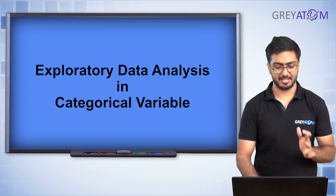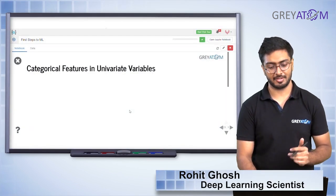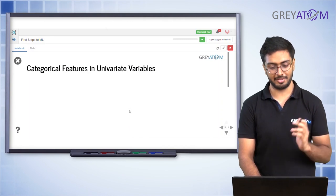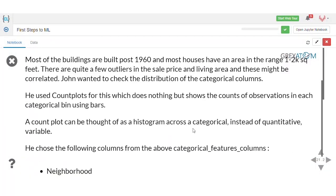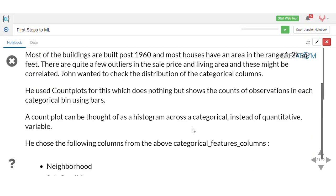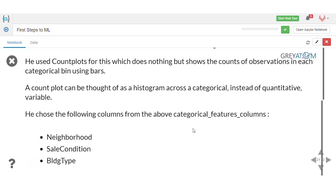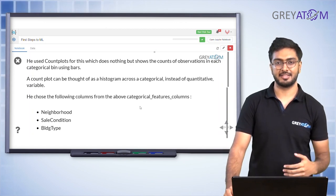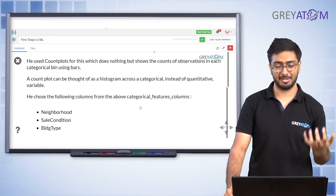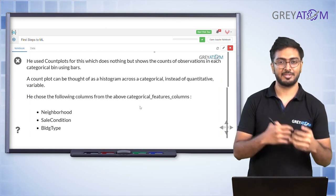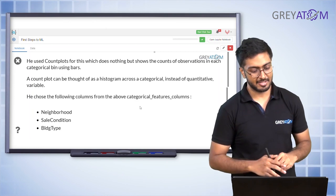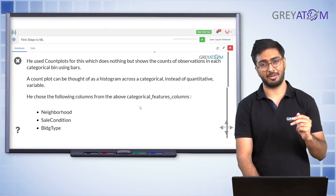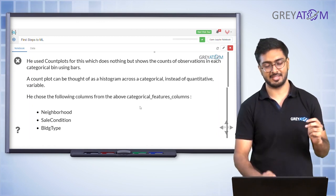Next up is categorical features in univariate analysis. So right now we looked at numeric features, now we are going to look at categorical features one at a time — univariate analysis. The most basic thing you can use is count plots. A count plot is basically plotting the number of instances for each class of a categorical variable. For example, houses could be colored blue, red, or green, and a count plot shows how many houses belong to each color.